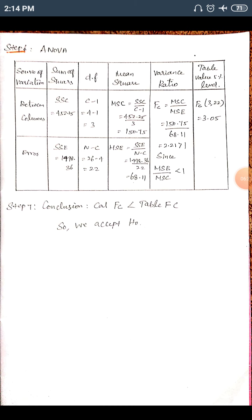For the 'Error' row: SSE = 1498.36, degrees of freedom = N − C = 26 − 4 = 22, and Mean Square of Error (MSE) = SSE/df = 1498.36/22 = 68.11. For the F-ratio (variance ratio), we place the higher value in the numerator. Since MSC = 150.75 is higher than MSE = 68.11, we use MSC as the numerator.